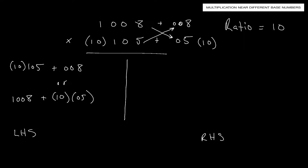Let's compute: 10 times 105 gives 1,050, plus 8 gives 1,058. Checking the other way: 1,008 plus 10 times 5 is 1,008 plus 50, which also gives 1,058. So the left-hand side of our answer is 1,058.